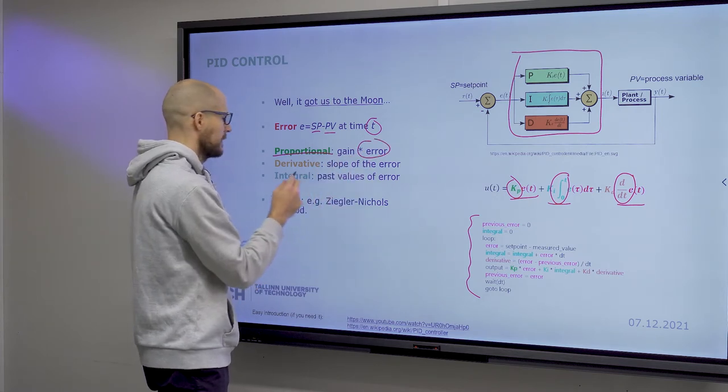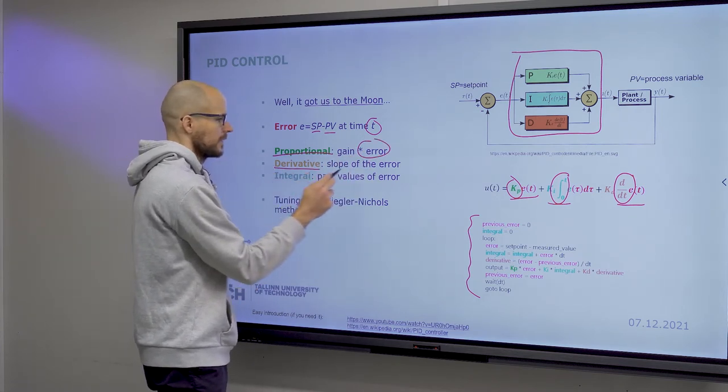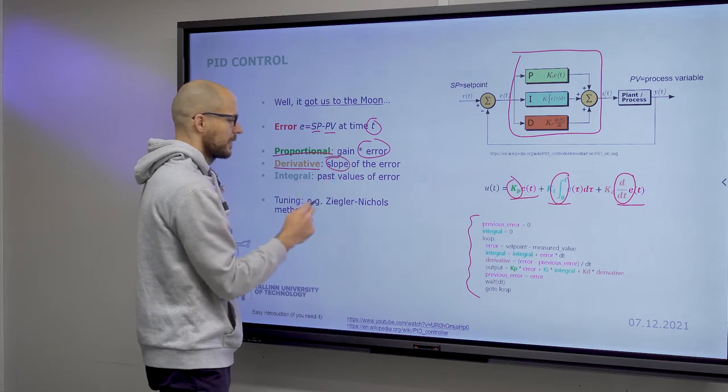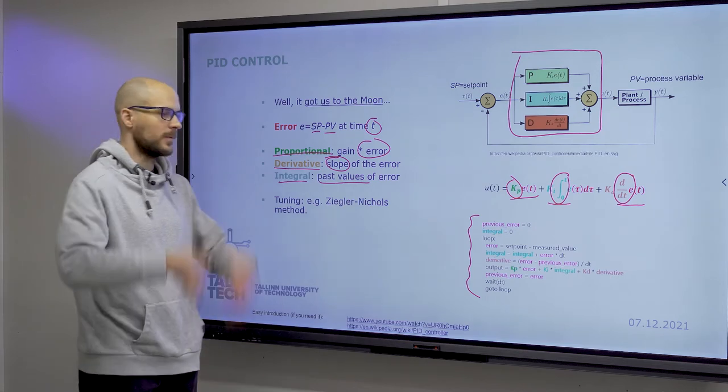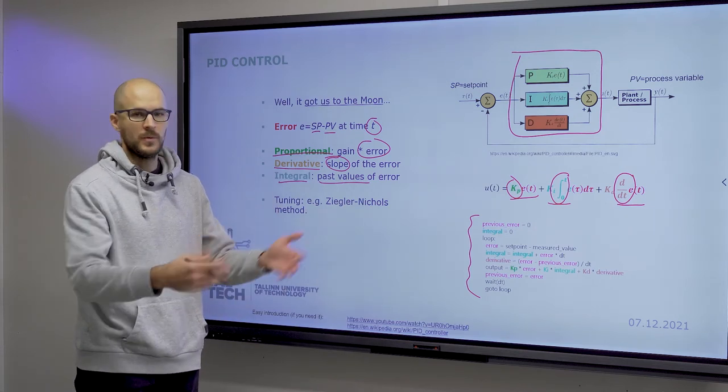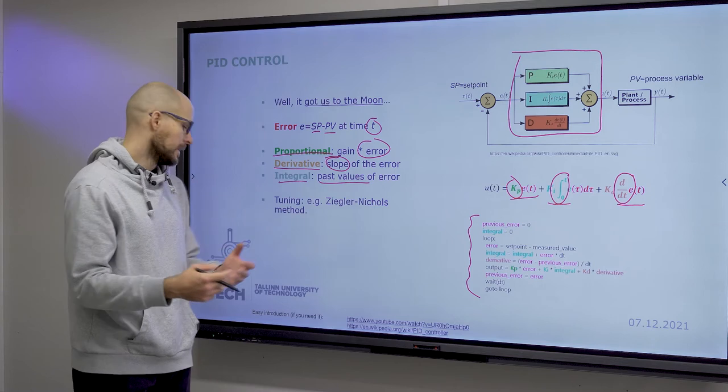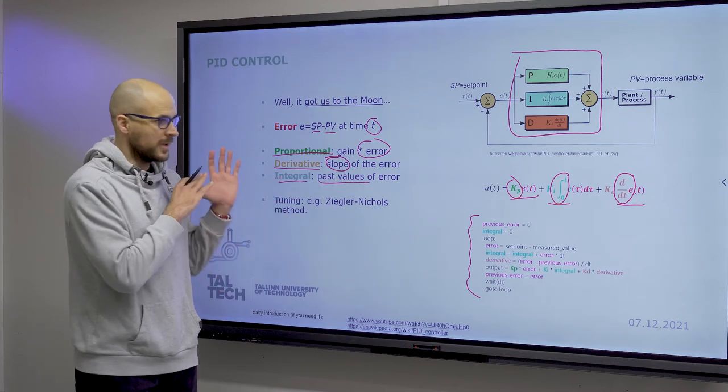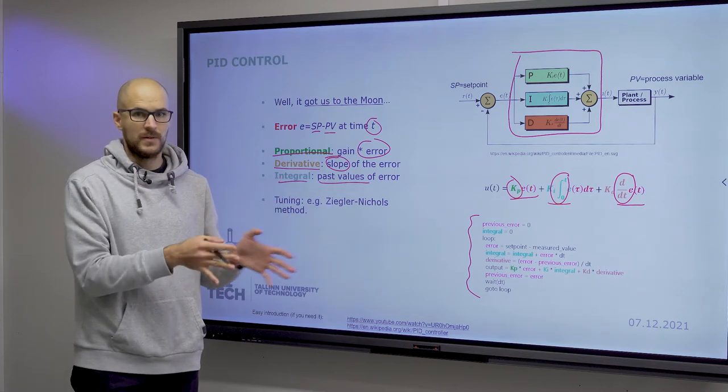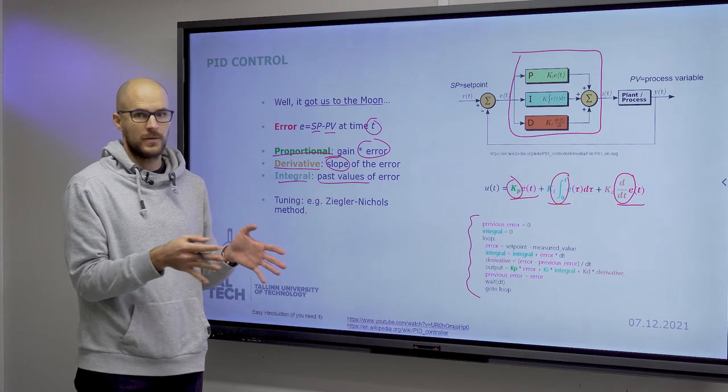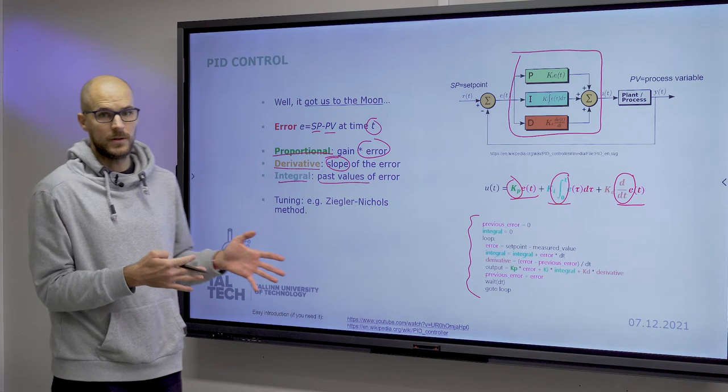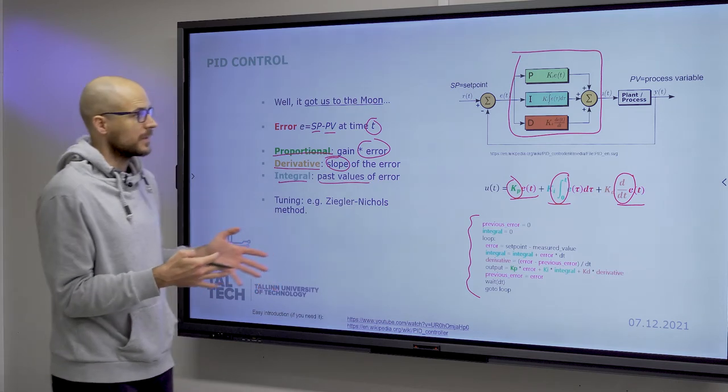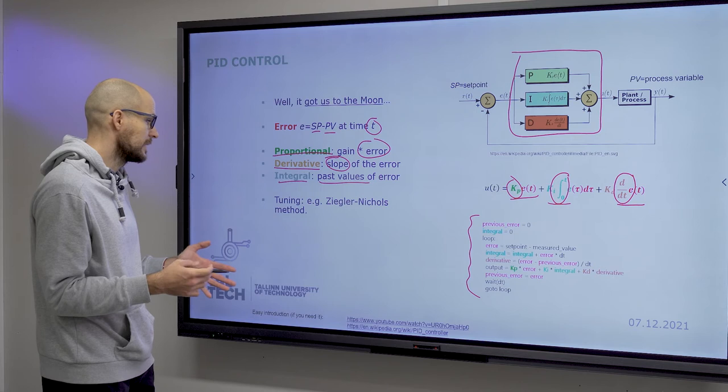Derivative defines the slope of the error and integral takes into account the past values of the error. And what this adds up to is a smooth process control. If you would like to, you can find tons of materials on the internet on the details of PID control and what it does. I just wanted to show it on a slide that this exists to anyone who hasn't studied about it.